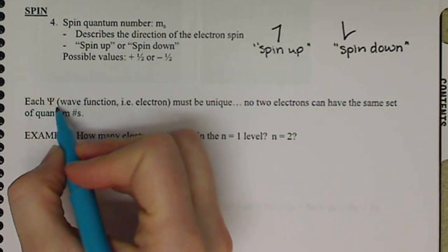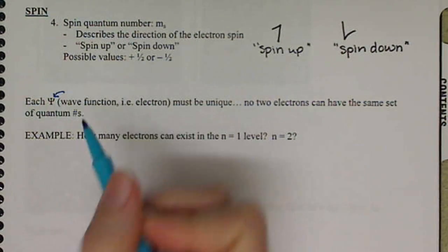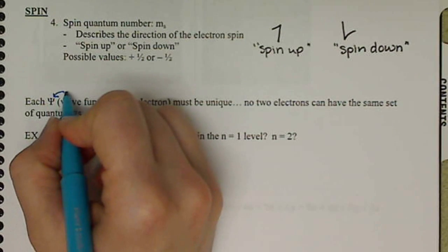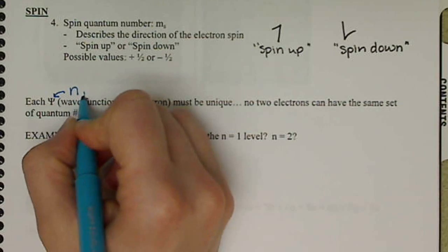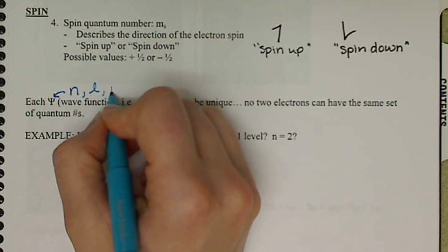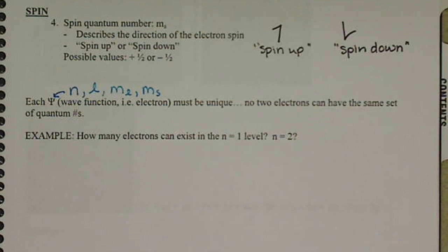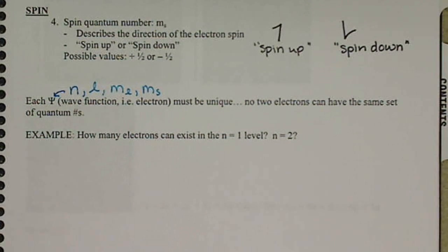And how we do that, how we represent each of these psi's, is for however many electrons we have, each psi then is going to have a unique set of N, L, M sub L, and M sub S values. And so let's look at what this means.